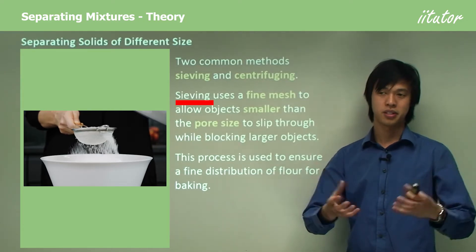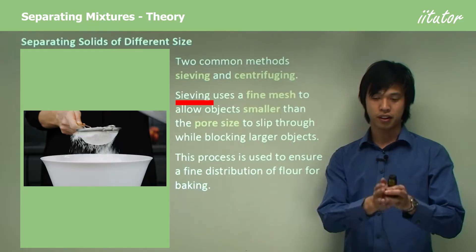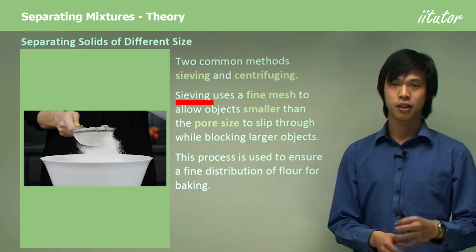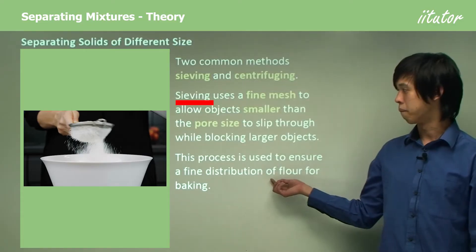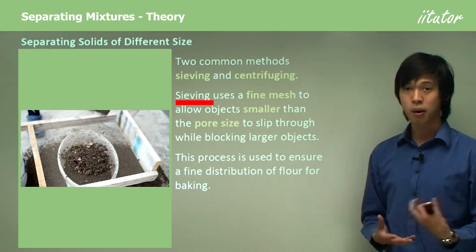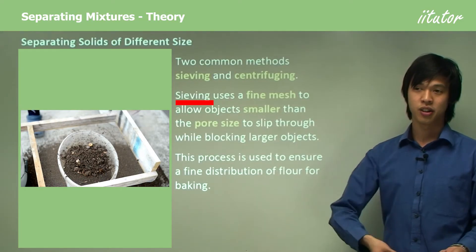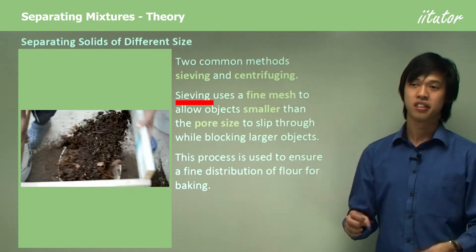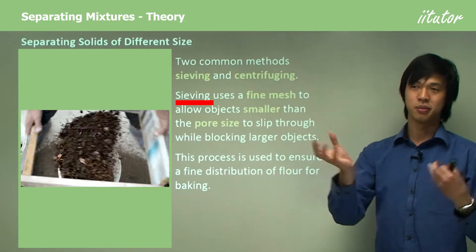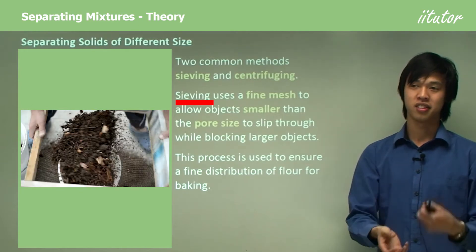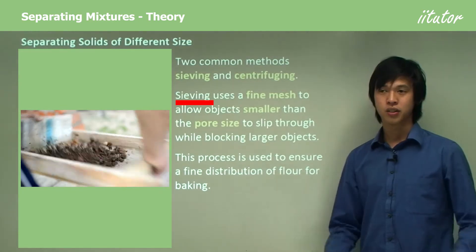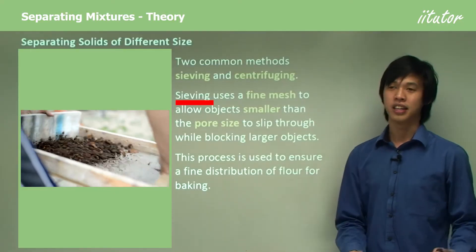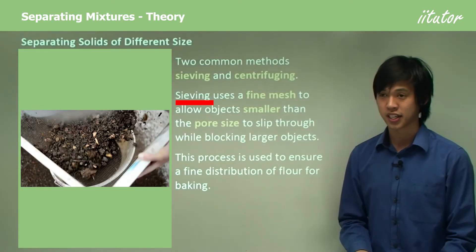For baking purposes, you'd use this to get a very fine and even distribution of particles through your flour, so you wouldn't get any big clumps. The property we're exploiting here is that one particle is simply bigger than the other — that's a physical property: size. The bigger particle can't get through the hole. As I go through this, try and think about what properties we're actually exploiting before I tell you, and it'll help you clarify what these processes are actually doing.